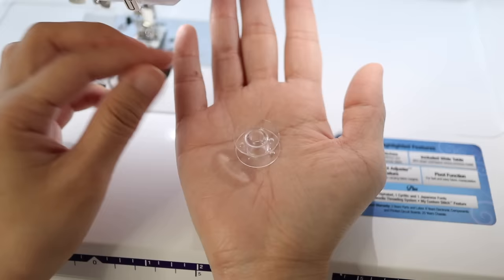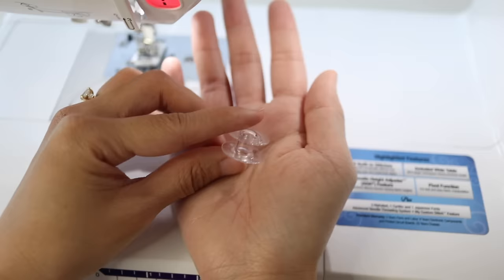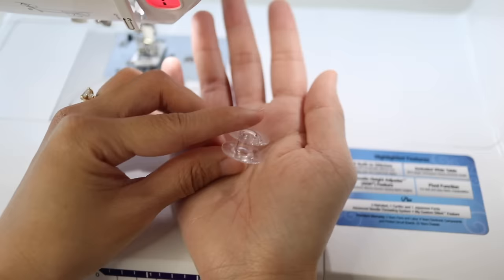Next grab your empty bobbin. There should be some included with your machine but if not you can purchase a pack of plastic bobbins which I recommend you do so anyways because you'll eventually need to use a variety of different colored threads. Just make sure the bobbins are compatible with your machine.